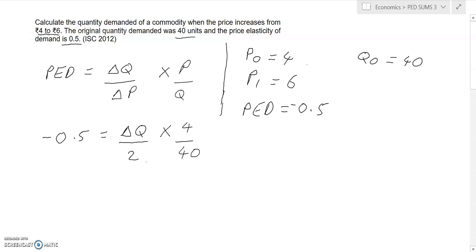Now simplifying this, 4 upon 40 effectively becomes 1/10, giving us ΔQ over 20. So -0.5 times 20 gives us the change in quantity, and therefore we know the change in quantity is -10.